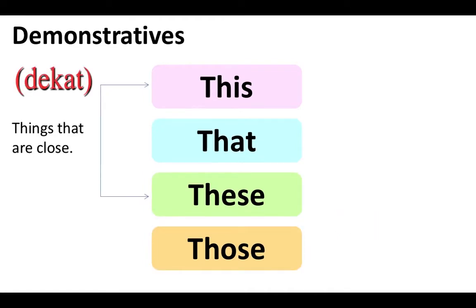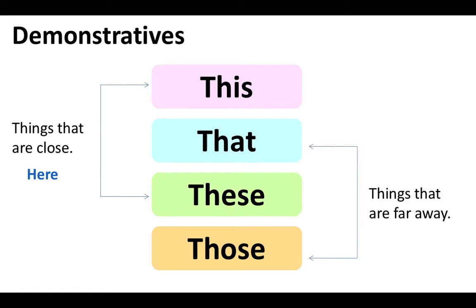This and these refer to things that are close. We can think of them as being here. Whereas, that and those refer to things that are far away. So we can think of them as being there.